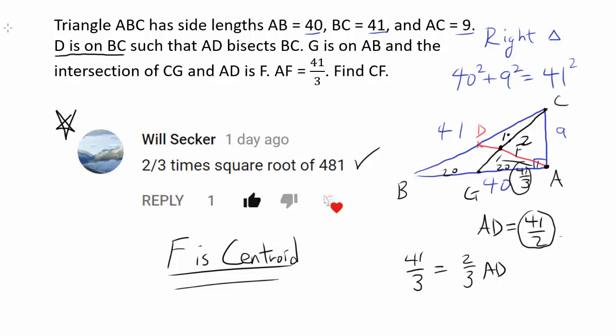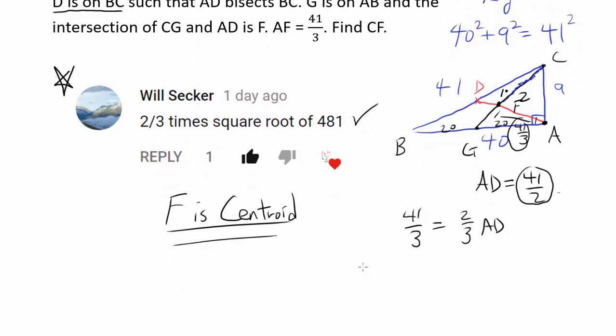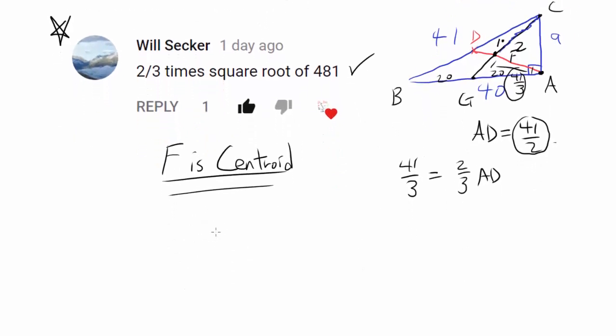So what do we want to find? We want to find CF. And to find CF, since you are going from vertex to centroid and the centroid divides the median in 2 to 1 ratio, our answer is going to be 2 thirds of CG. So if we can find CG, we are done.